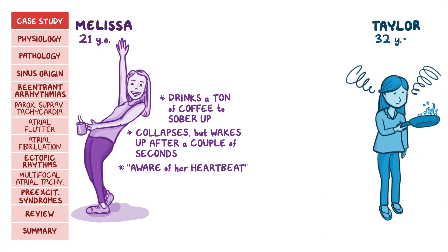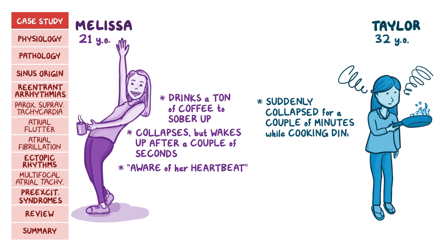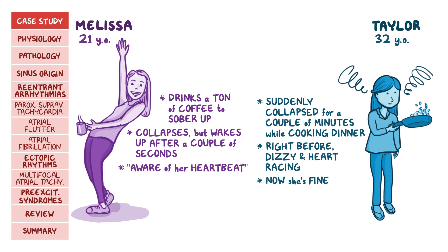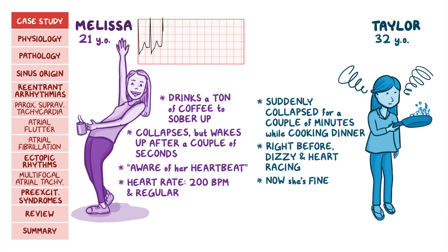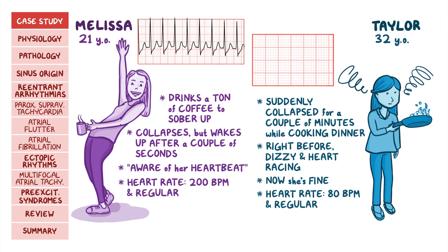Then comes Taylor, a 32-year-old female who is brought to the emergency room by her partner because she suddenly collapsed for a couple of minutes while cooking dinner. Taylor's now awake, and she tells you that right before collapsing, she was feeling dizzy and like her heart was racing, but now she's fine. They're both placed on different monitors. Melissa's heart rate is 200 beats per minute and regular, and this is Melissa's ECG. Taylor's heart rate is 80 beats per minute and regular, so everything seems fine. However, her ECG shows this.